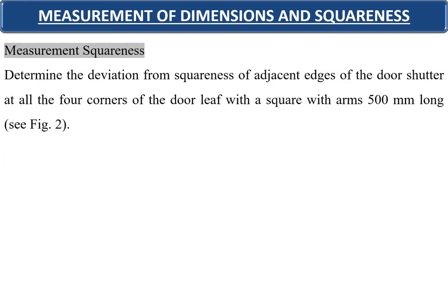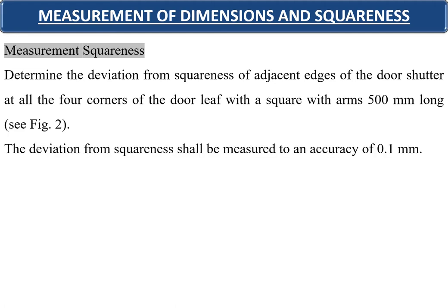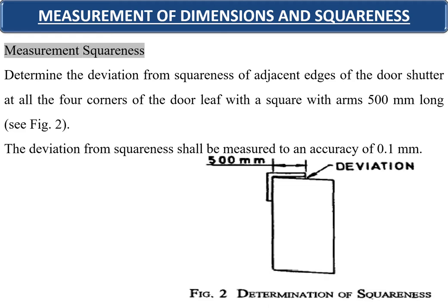For measurement of squareness, it determines the deviation from squareness of the adjacent edges of door shutters at all four corners of the door leaf, using a square with arms 500 millimeters long as shown in the photograph. The deviation from squareness shall be measured to an accuracy of 0.1 millimeters, placing the 500 mm rectangle at all four corners.